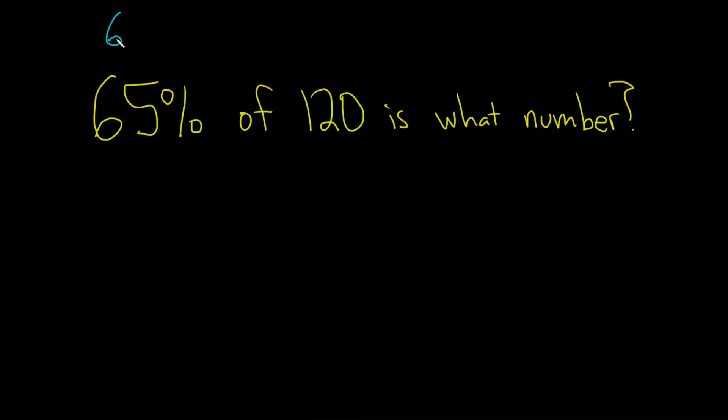Keep in mind, 65 has a decimal point at the end like this. So to turn it into a pure decimal, you take this decimal point and you go to the left two times. So this becomes .65.